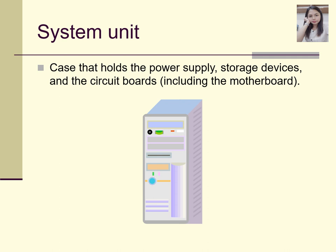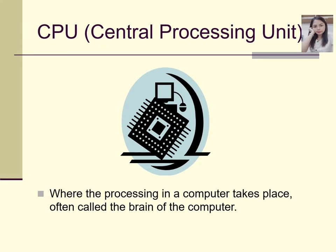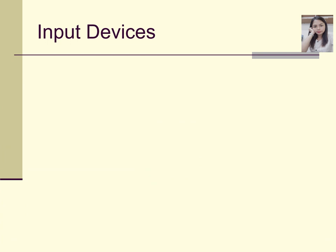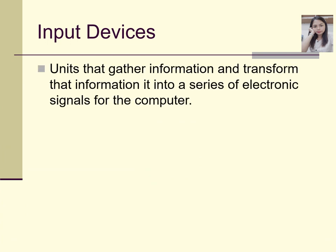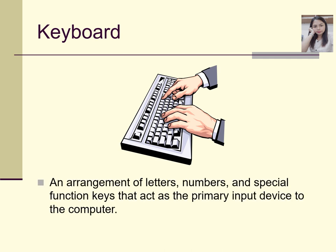Without the system unit, if it is damaged, your work and the things you have saved will be lost. The central processing unit is where the processing in the computer takes place — it is often called the brain of the computer. We use input devices to gather information and transform it. For example, the keyboard — we use it to input data, and it has arrangements of letters, numbers, and special function keys that act as the primary input device.